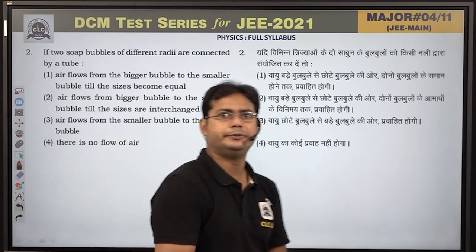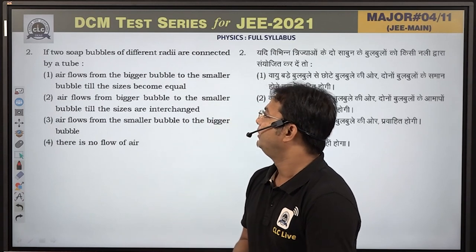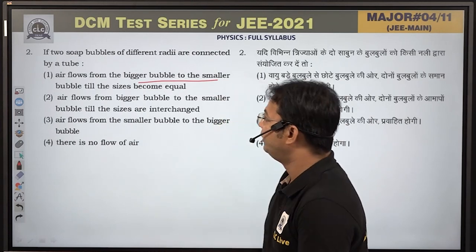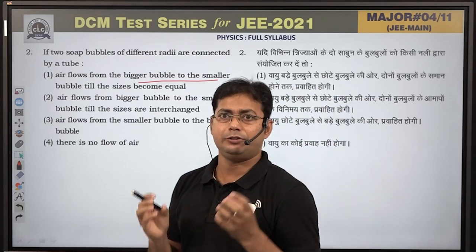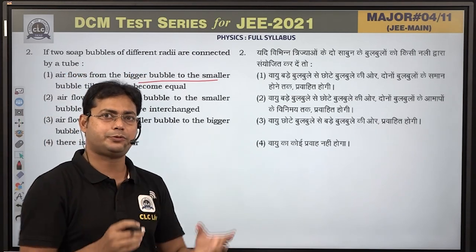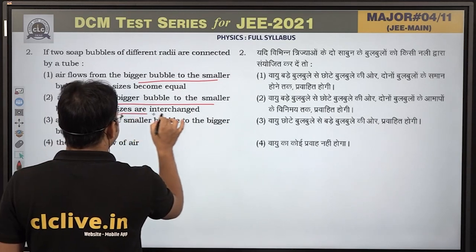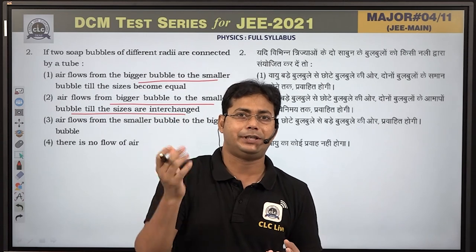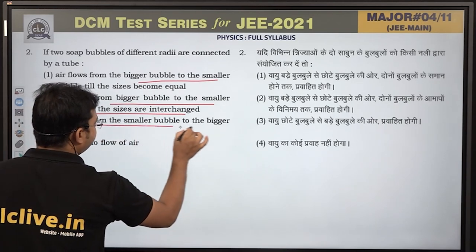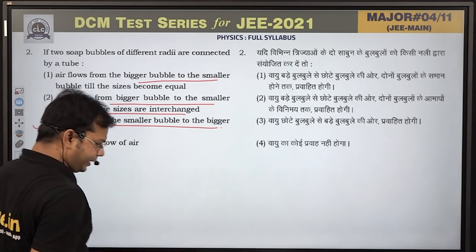Question number 2: If two soap bubbles of different radii are connected by a tube, air flows from the bigger bubble to the smaller bubble till the sizes become equal — that's option 1. Option 2 says sizes interchange. Option 3 says air flows from smaller to bigger bubble. Option 4 says there is no flow. The correct answer is option 3.